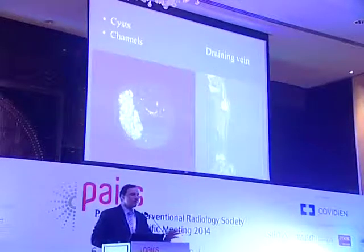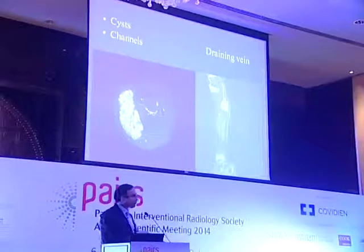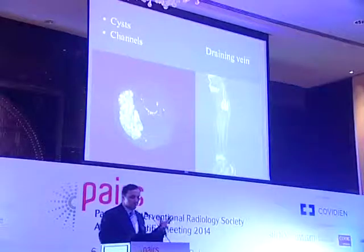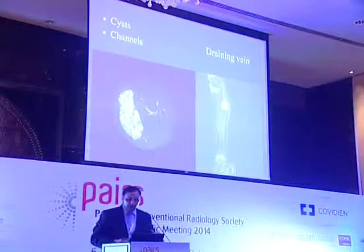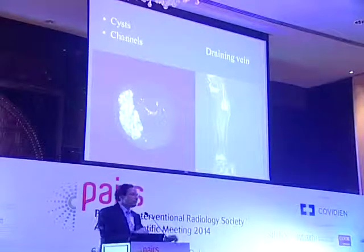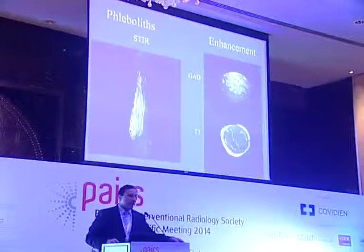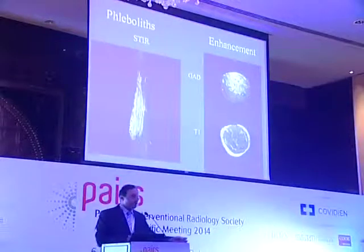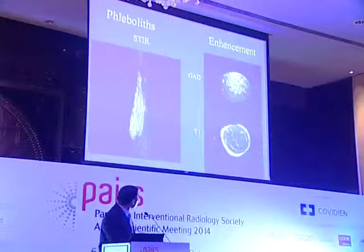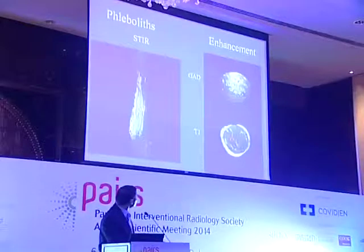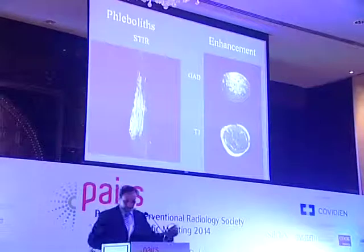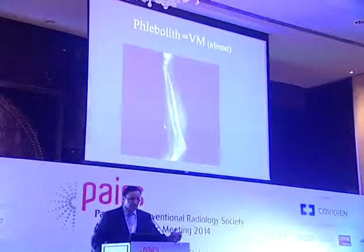On MRI, venous malformation shows an extremely bright T2 signal. I recommend using T2 fat-sat or STIR sequences to augment the appearance of the lesion. You can often see a draining vein. On T1 it appears almost similar to muscle, and when it enhances, it enhances significantly. Phlebolus are often associated with venous malformation.